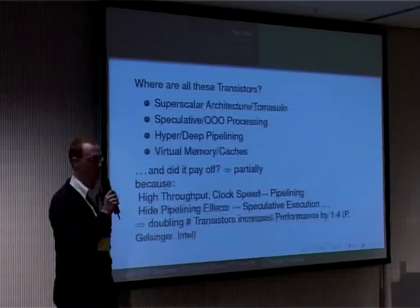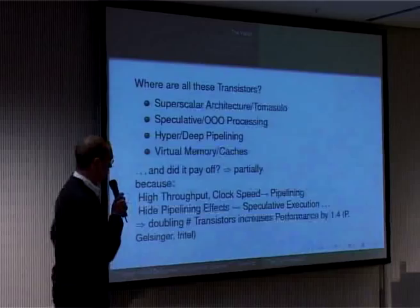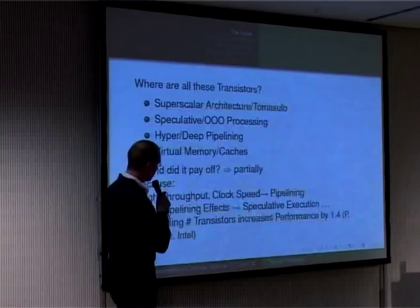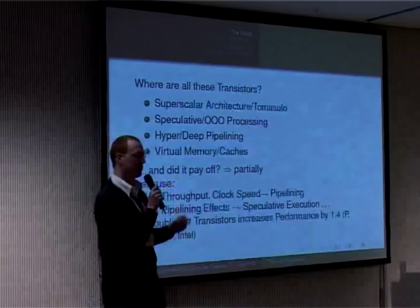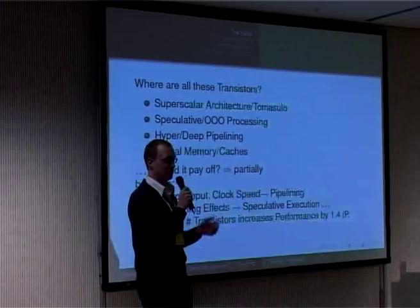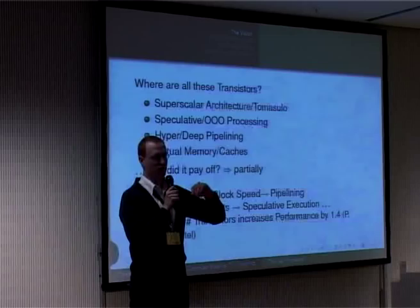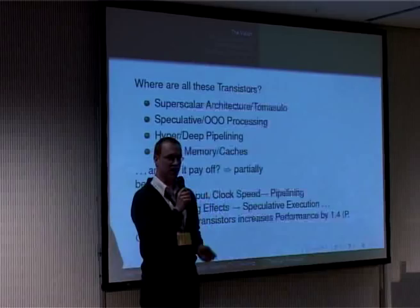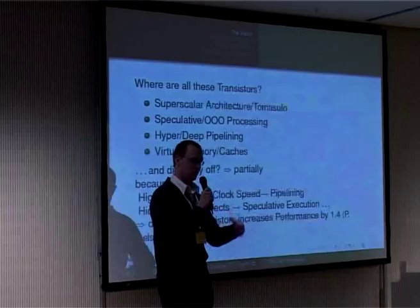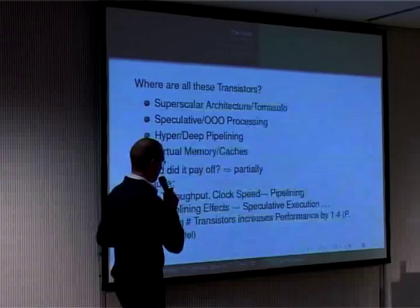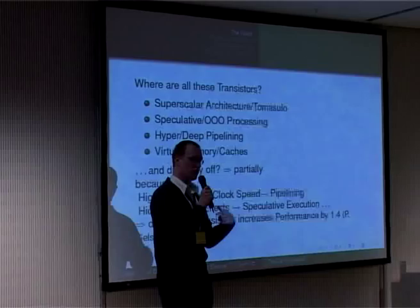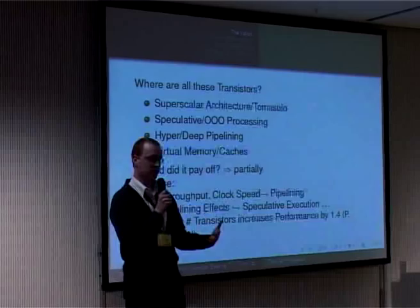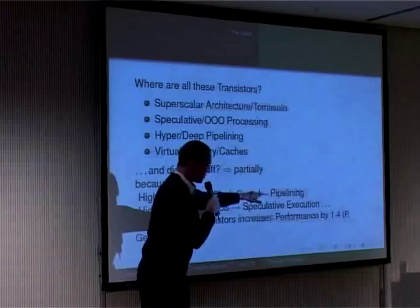Did it pay off? Did it help improve the overall CPU speed? Partially. We reached highest throughput and high clock speed very easily through pipelining — a concept of parallelizing some architecture — where you have more than one pipeline stage computing in parallel. We shorten the longest path by dividing it by N for N pipeline stages. But this costs transistors to introduce buffers between pipeline stages. We reach very high clock rates through pipelining, but problems arise: the pipeline effects.